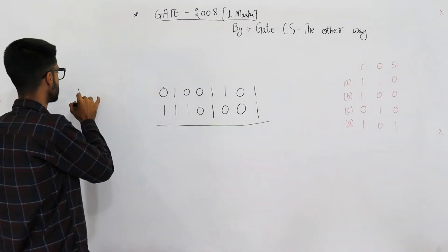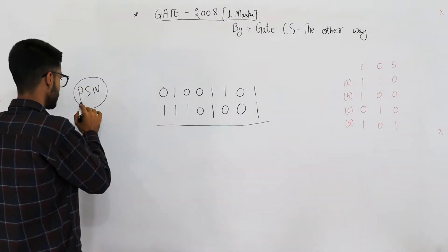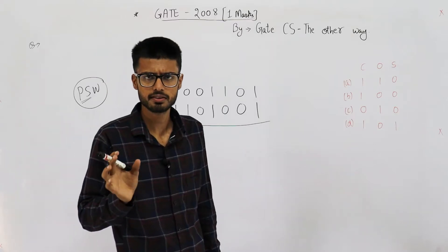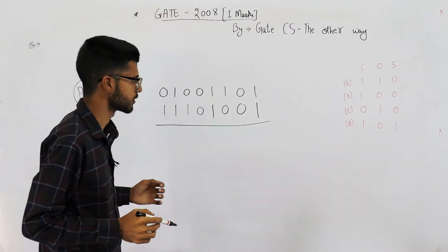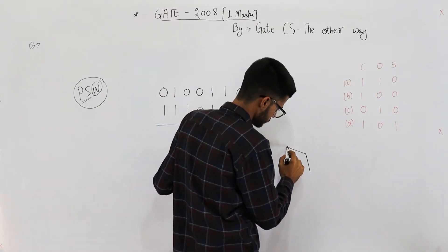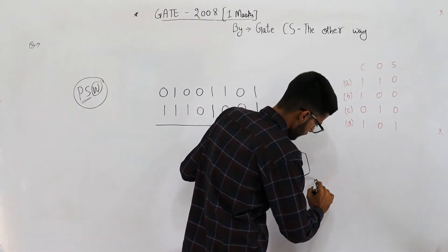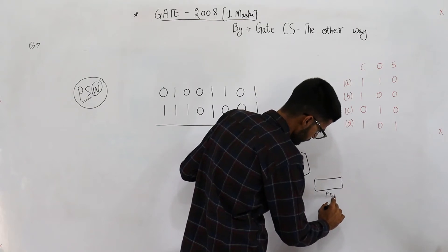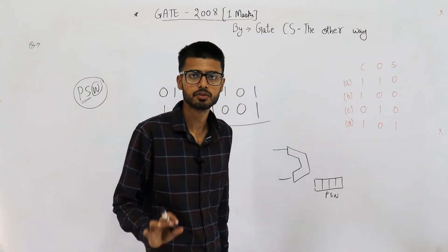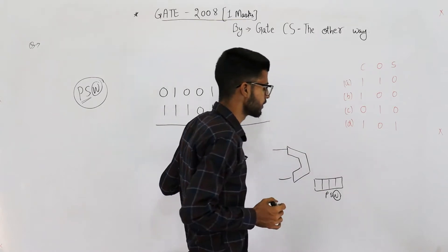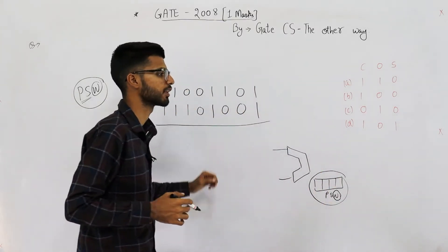So first, what is this PSW? PSW stands for Program Status Word. 'Program status' is self-explanatory — it tells us the status of the recently executed instruction: did we generate a carry, or was there any overflow? It's called a 'word' because we have a register named PSW that stores all the flag bits combined, and all the flags stored in one single register are collectively known as the program status word.